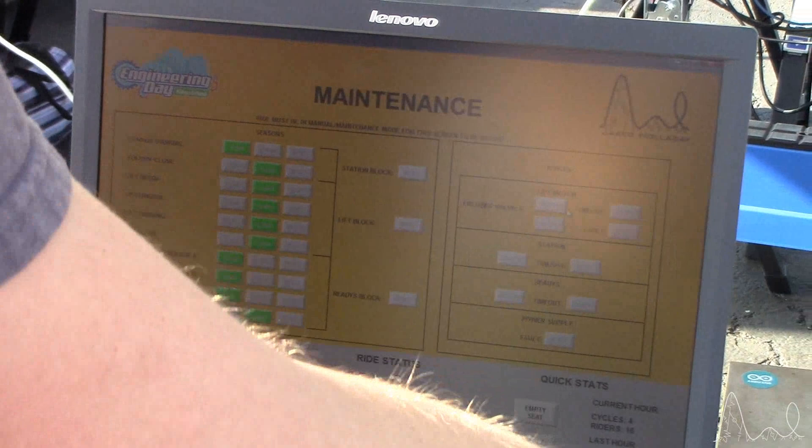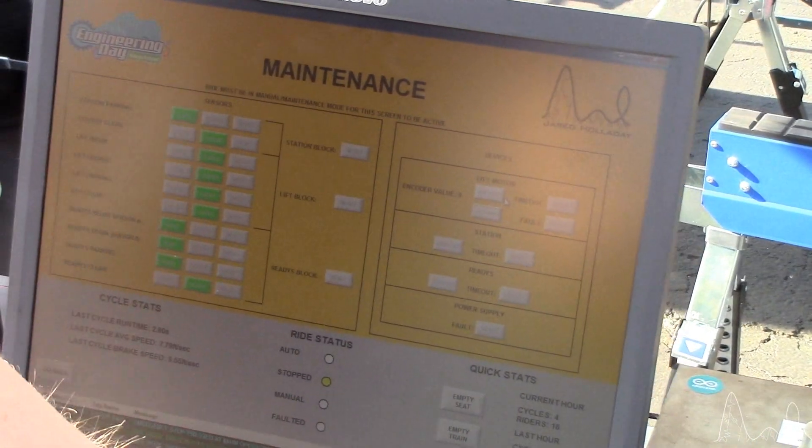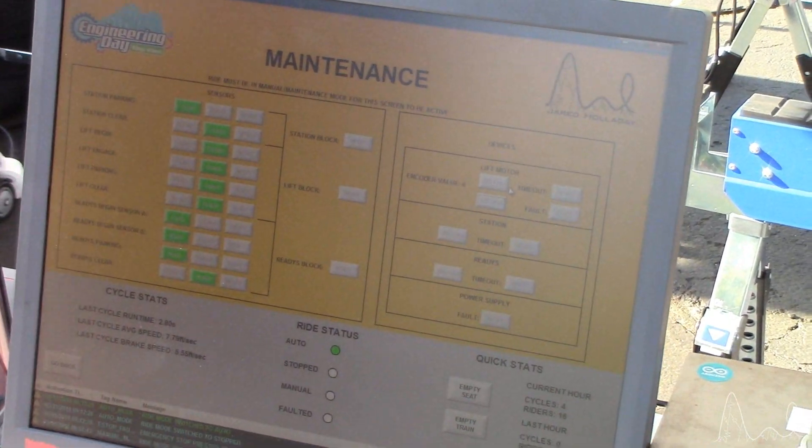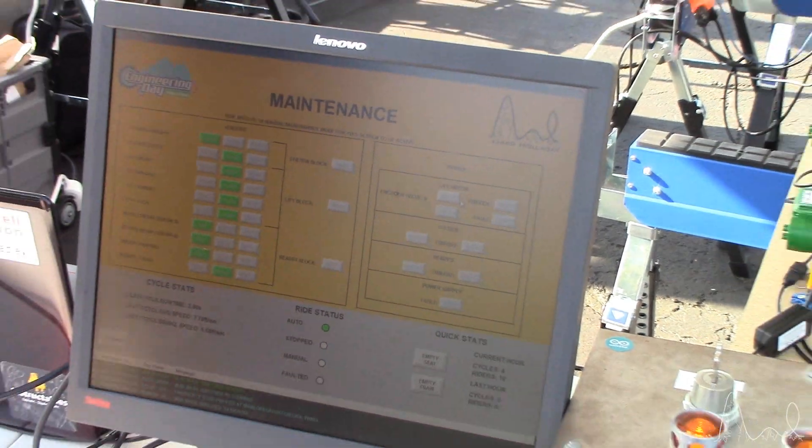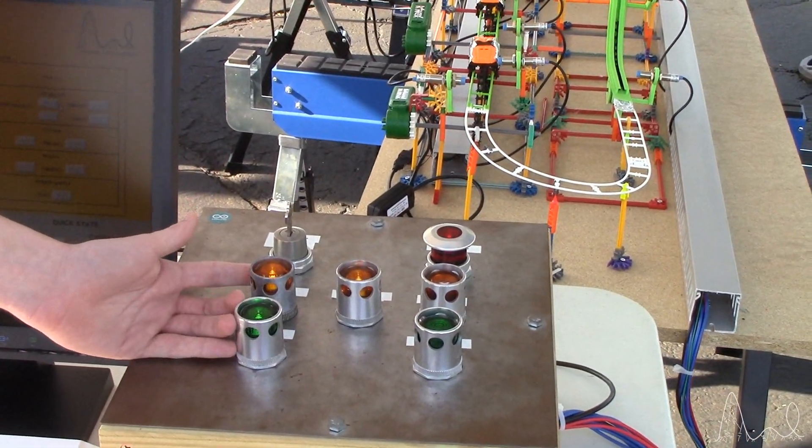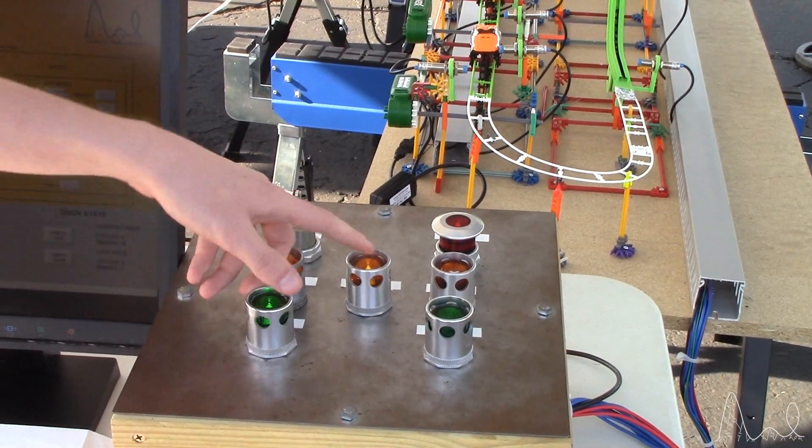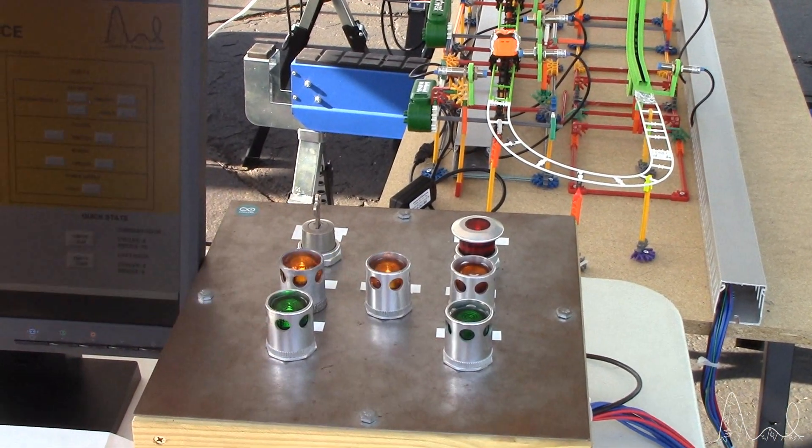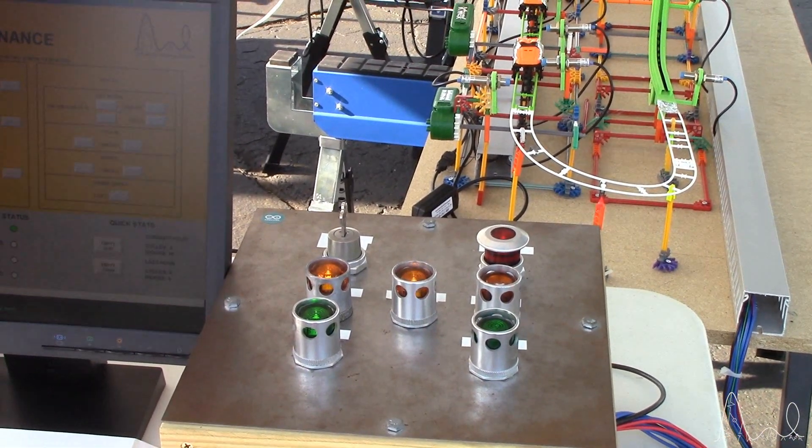So once I push auto start, that status will actually change from stopped to auto. And as you can see on the panel, your panel lights have changed as well. So now the ride stop is flashing because the ride stop is no longer on and you're ready to start the lift.